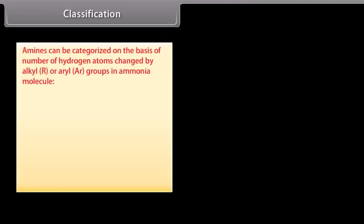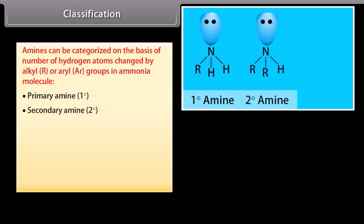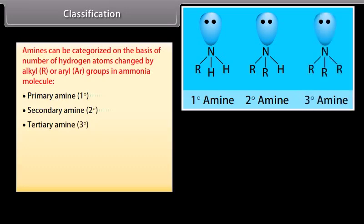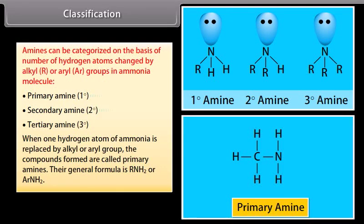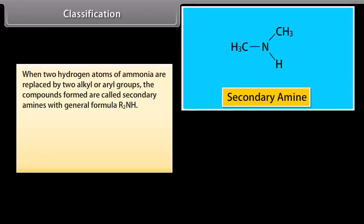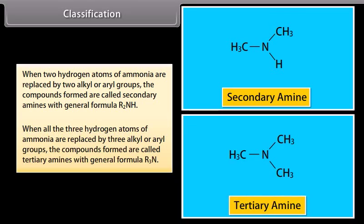Amines can be categorized on the basis of number of hydrogen atoms replaced by alkyl or aryl groups in ammonia. Primary amine (1°): when 1 hydrogen atom is replaced, forming compounds with general formula RNH₂ or ArNH₂. Secondary amine (2°): when 2 hydrogen atoms are replaced, with general formula R₂NH. Tertiary amine (3°): when all 3 hydrogen atoms are replaced, with general formula R₃N.